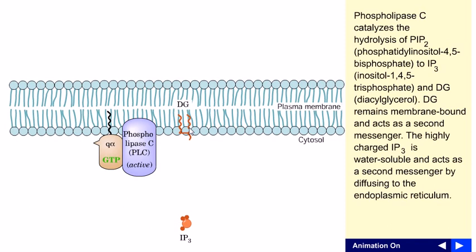Diacylglycerol remains in the cell membrane, embedded because it has two acyl chains attached to glycerol. It is present in the cell membrane, but IP3 or inositol triphosphate, having three phosphate groups, can move on to the next level of activation.